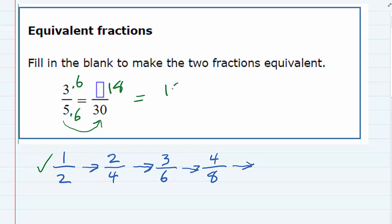And in that case 3 times 6 gives us an 18. So 18 was the missing number and 18 thirtieths is the fraction that is equal to 3 fifths.